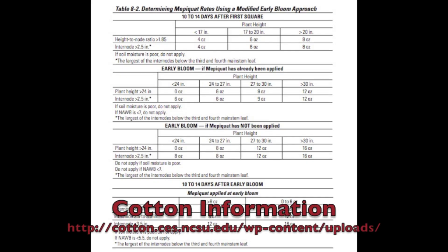Once we have determined plant height and internode length, we can use this table found in the cotton information book, table 8-2, to determine what rates of plant growth regulators we need to use.